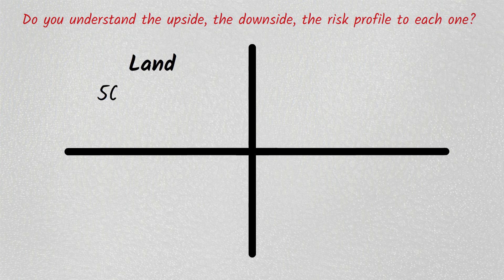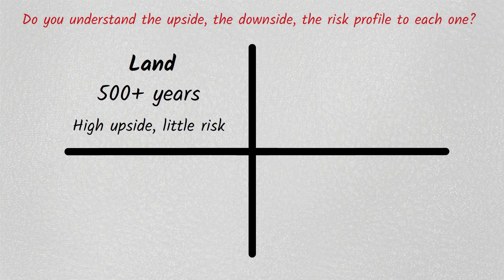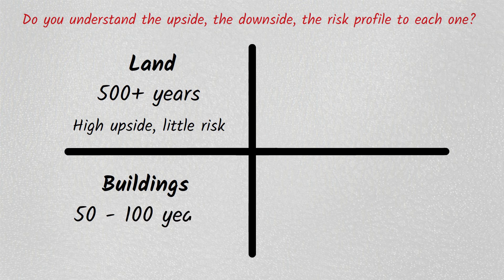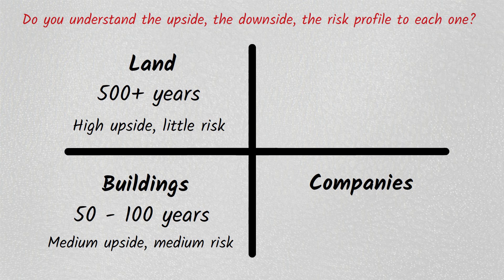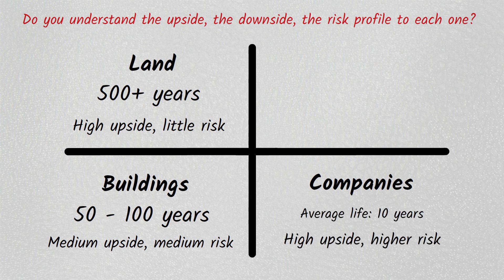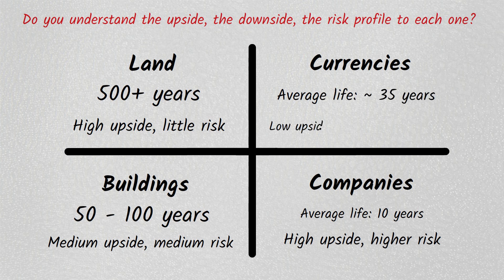The land will probably be here for 500 years. The buildings probably have a useful life of 50 to 100 years max. How about the companies? Name a company in London that's been around for 100 years. That's the best way to understand the crypto economy. The digital currencies have to be compliant and compatible — they have regulatory risk. There's not a lot of upside to owning those.